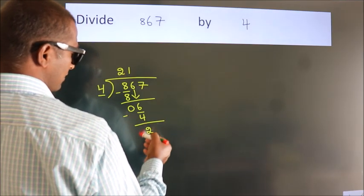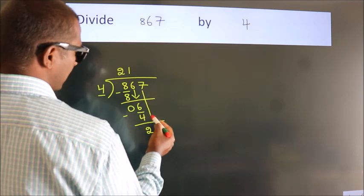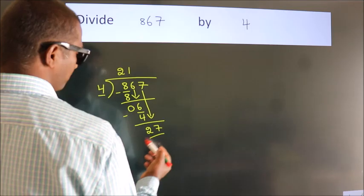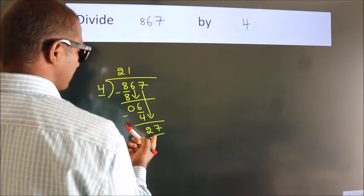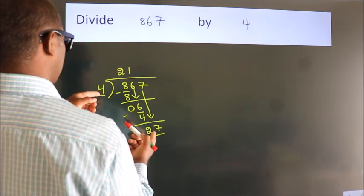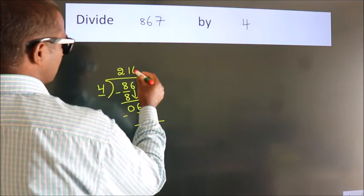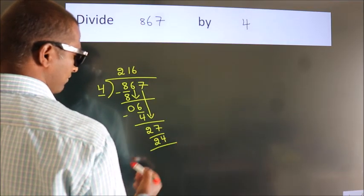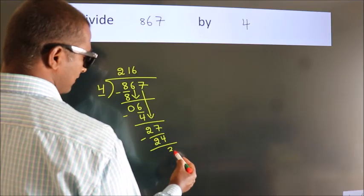After this, bring down the beside number. So 7 down, so 27. A number close to 27 in the 4 table is 4 sixes, 24. Now we subtract. We get 3.